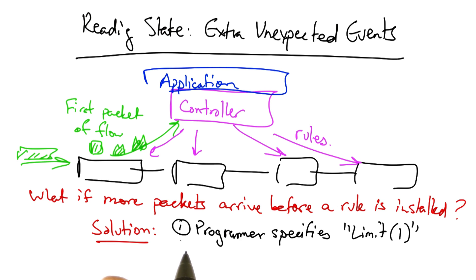So the solution is to have the programmer specify via a high level language a limit of one, indicating that the application should only see the first packet of the flow, and that the subsequent packets should be suppressed. The runtime system then hides the extra events.